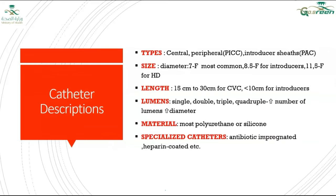The catheter itself comes in different types: central line, peripheral line, introducer sheaths, tunneled or non-tunneled, and HD catheters. Sizes range from 7 French to 8 French to 11 French for HD catheters. Length ranges from 15 to 30 centimeters. Lumens can be single, double, triple, or quadruple. The material is mostly polyethylene or silicone. There are also specialized catheters coated with antibiotics or heparin for certain situations.